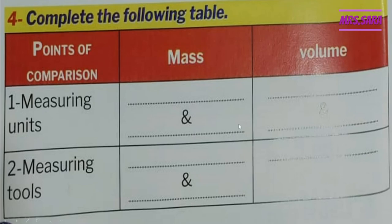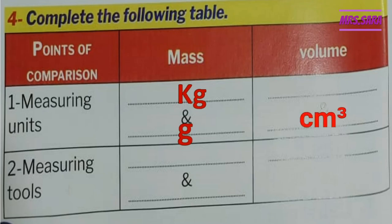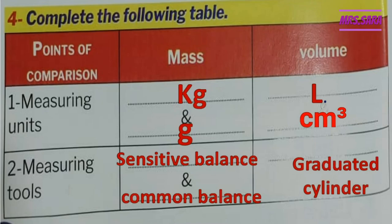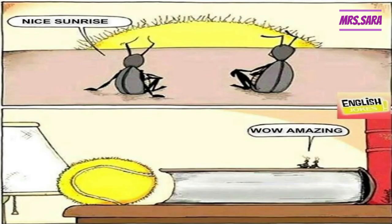Here is a comparison between mass and volume. Measuring units: for mass, kilogram for big mass and gram for small mass; for volume, cubic centimeter for small volume and liter for big volume. Measuring tools: for mass, a sensitive balance for small mass and a common balance for big mass; for volume, the graduated cylinder. This was our lesson for today — I hope you enjoyed it. Don't forget to like, subscribe, and share. Goodbye!